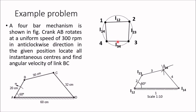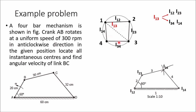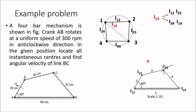To find I13, draw a line through I12 and I23, and another line through I14 and I34. The intersection of these two lines is I13, because I13 must be collinear with I12 and I23, and also collinear with I14 and I34. This follows from Kennedy's theorem applied to triangles 1-2-3 and 1-4-3.